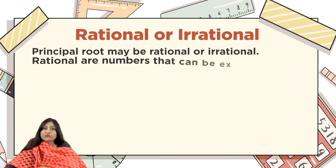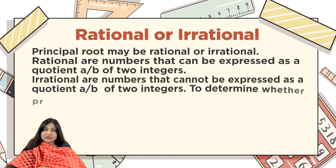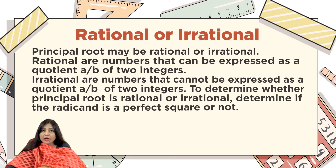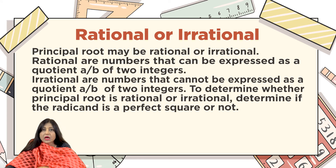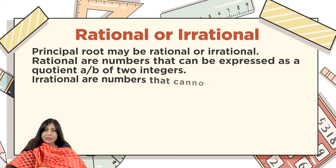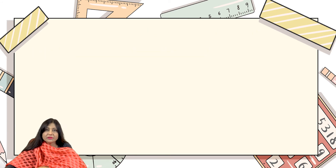Now, let's determine whether a principal root is rational or irrational. Rational numbers are numbers that can be expressed as a quotient a/b of two integers. Irrational numbers cannot be expressed as a quotient of two integers. To determine whether a principal root is rational or irrational, check if the radicand is a perfect square or not.